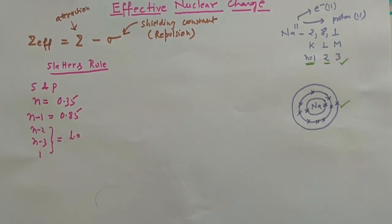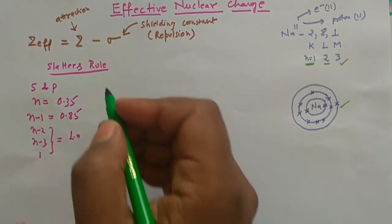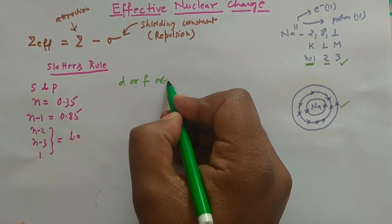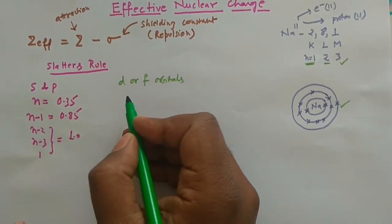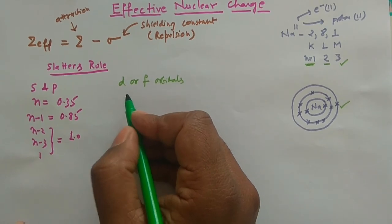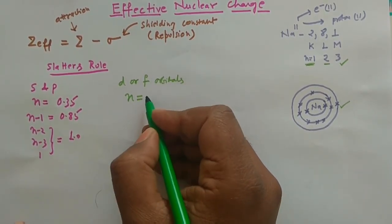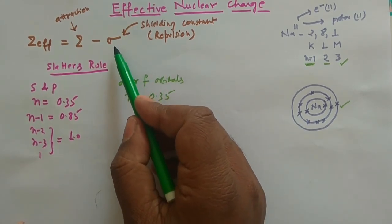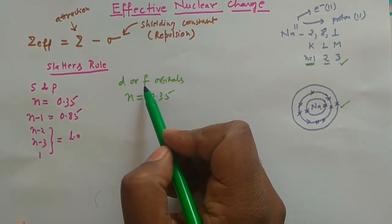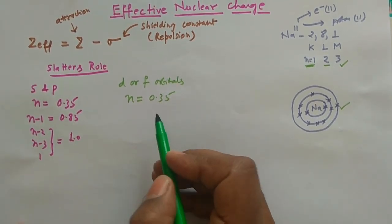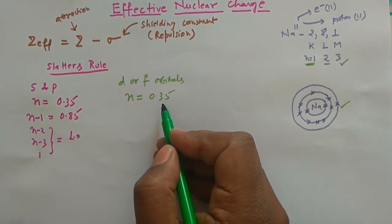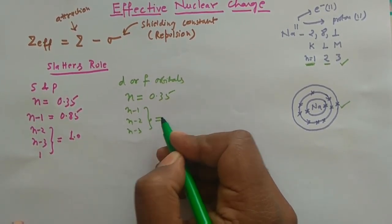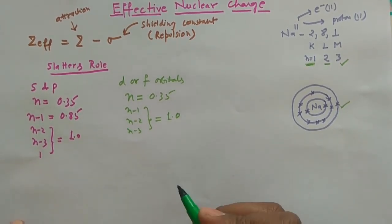For electrons present in the D or F orbitals, when calculating the shielding constant, you use 0.35 for electrons in the same shell. For all others — n−1, n−2, n−3 and so on — the value is 1.0. Once you have these values you can easily calculate the shielding constant and then the effective nuclear charge.